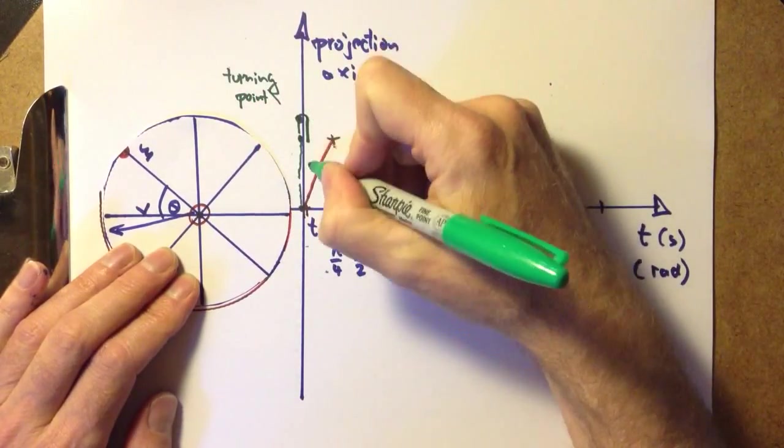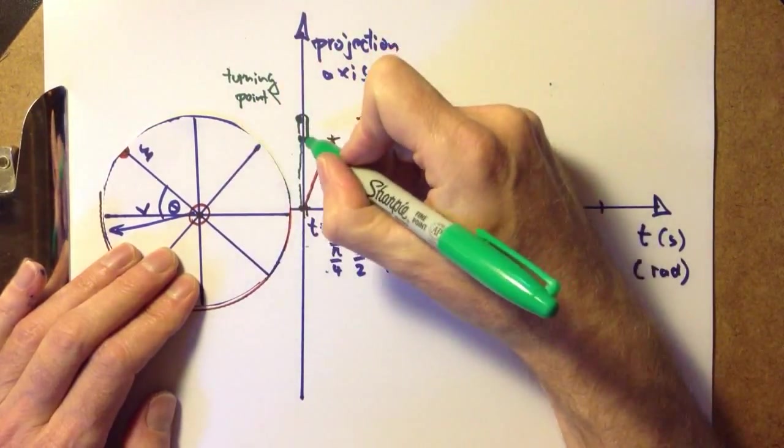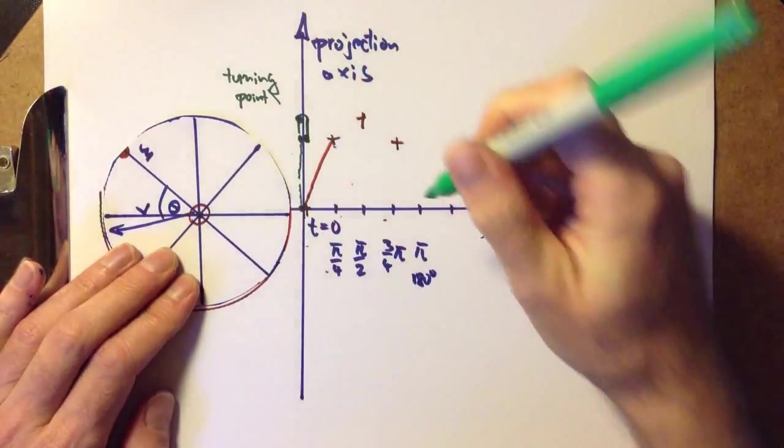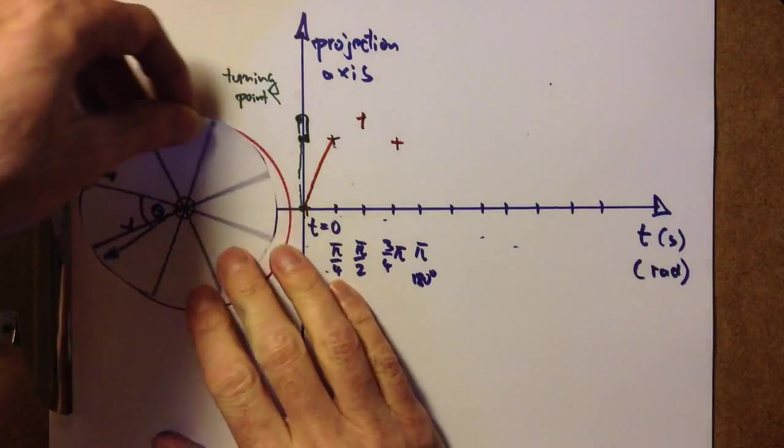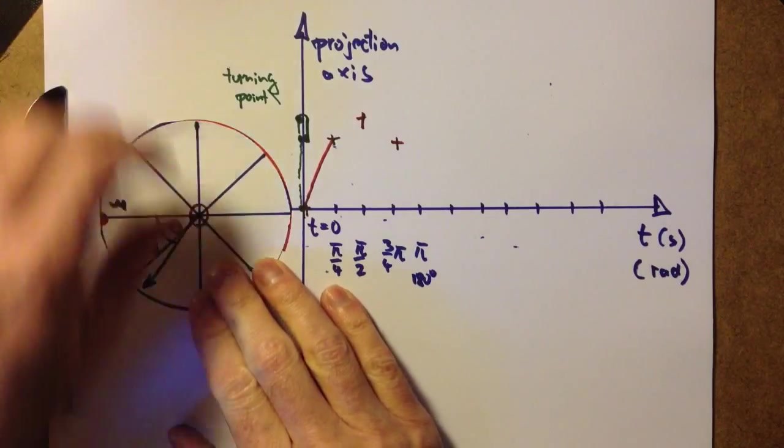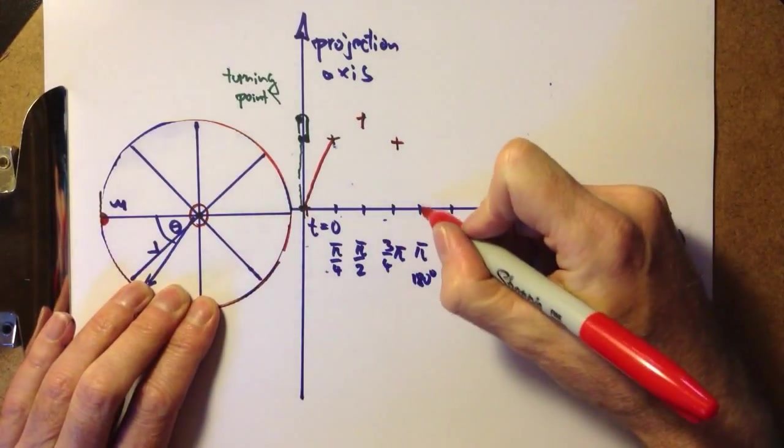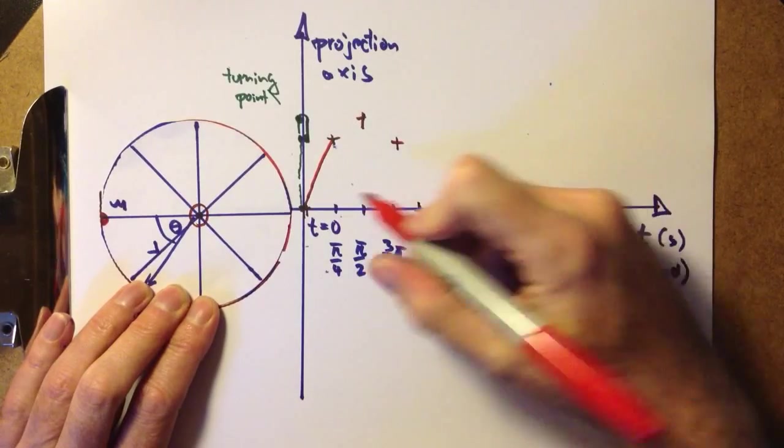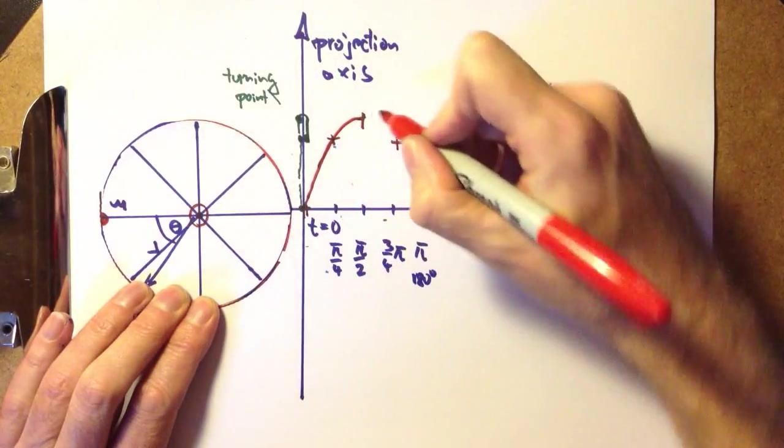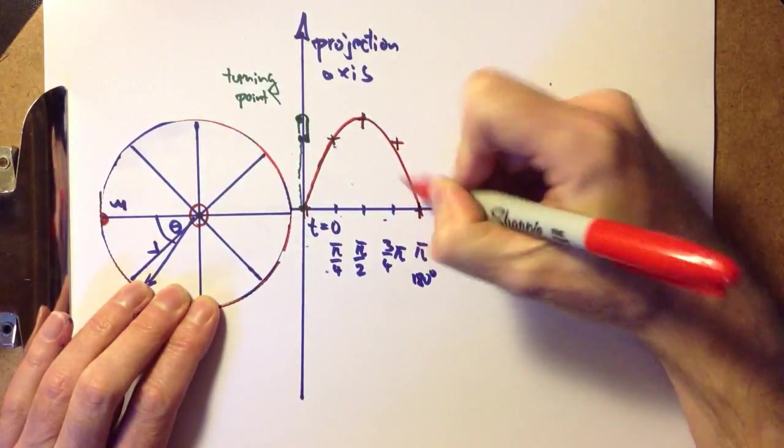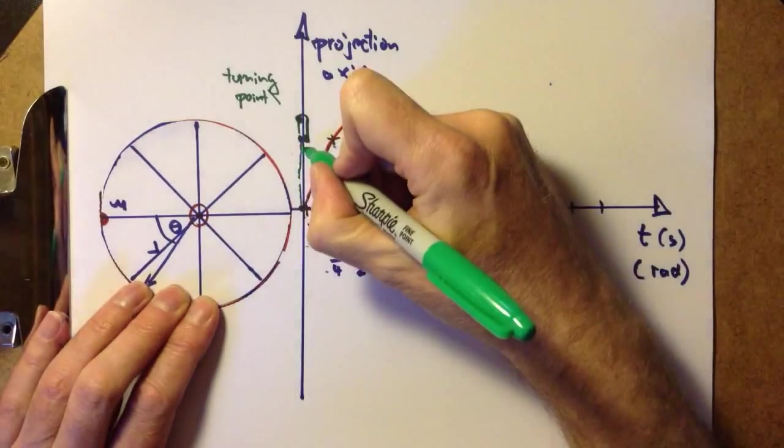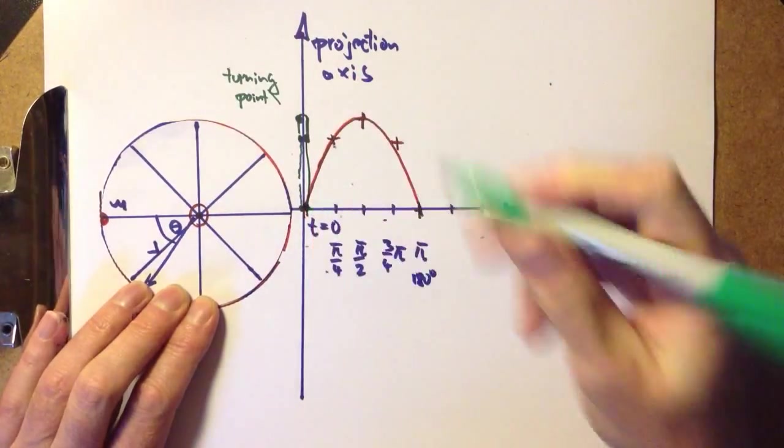And we're moving in the other direction. The projection moves in the other direction, giving us a point there. Another 45 degrees, we are back to zero. We're on the time axis. At π, we are down here. So we have a curve that looks like this. And the projection has moved down to zero as well.